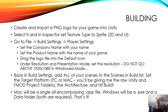Then, back in Build Settings, add all of your scenes to the scenes list in the Build List. Set the target platform — PC or Mac. You'll be giving me the raw Unity and FMOD project folders. Then set the architecture — if it's 64-bit or 32-bit — and it should probably be 64-bit.